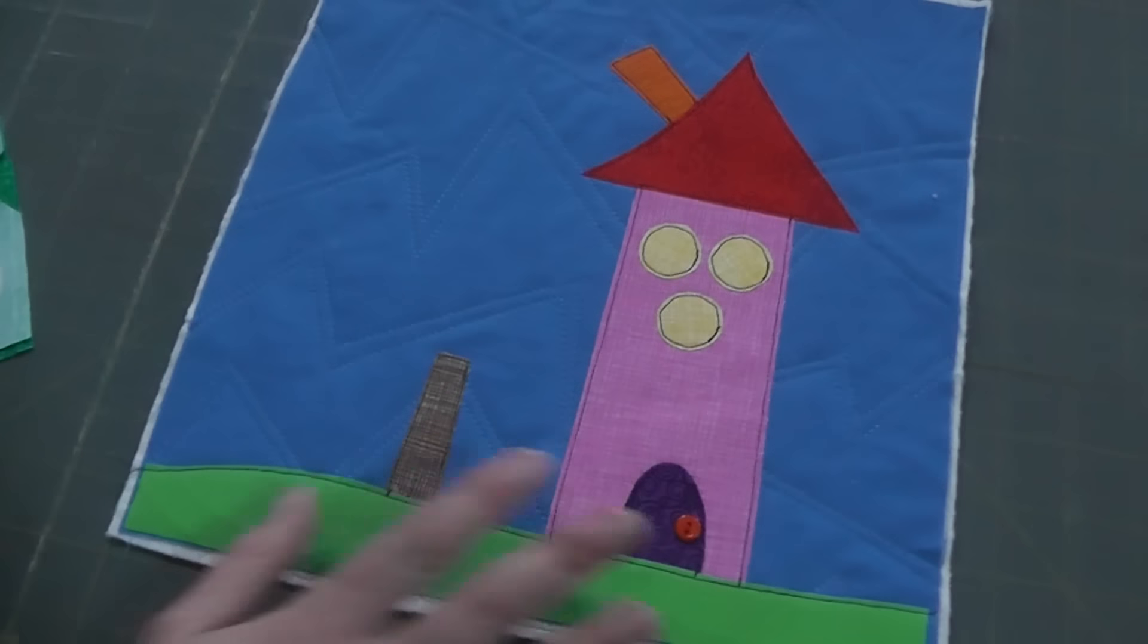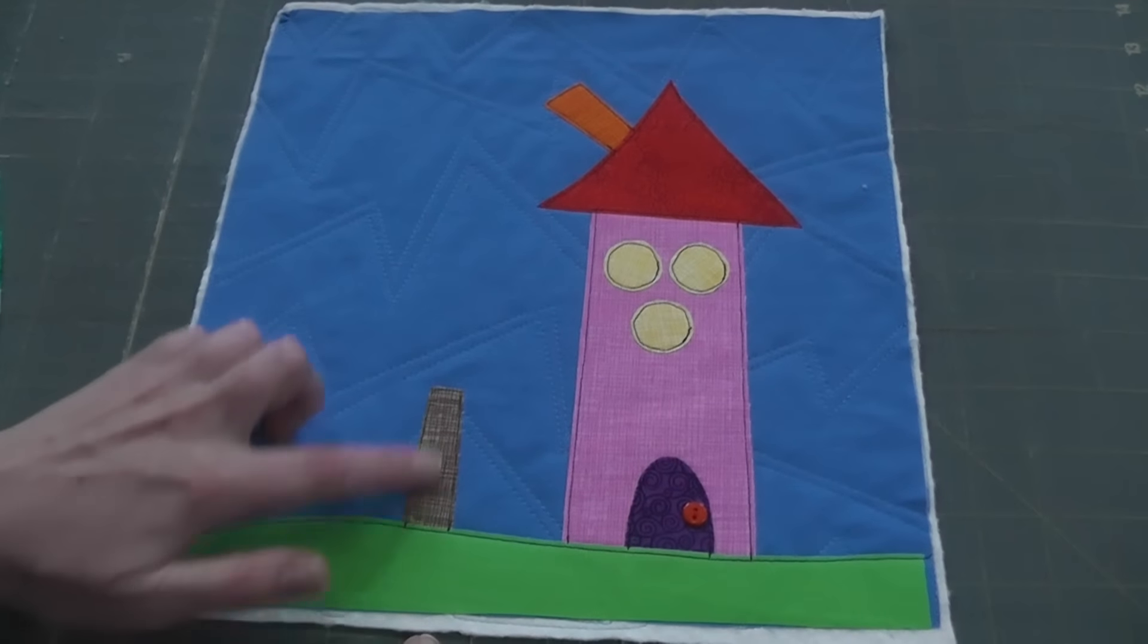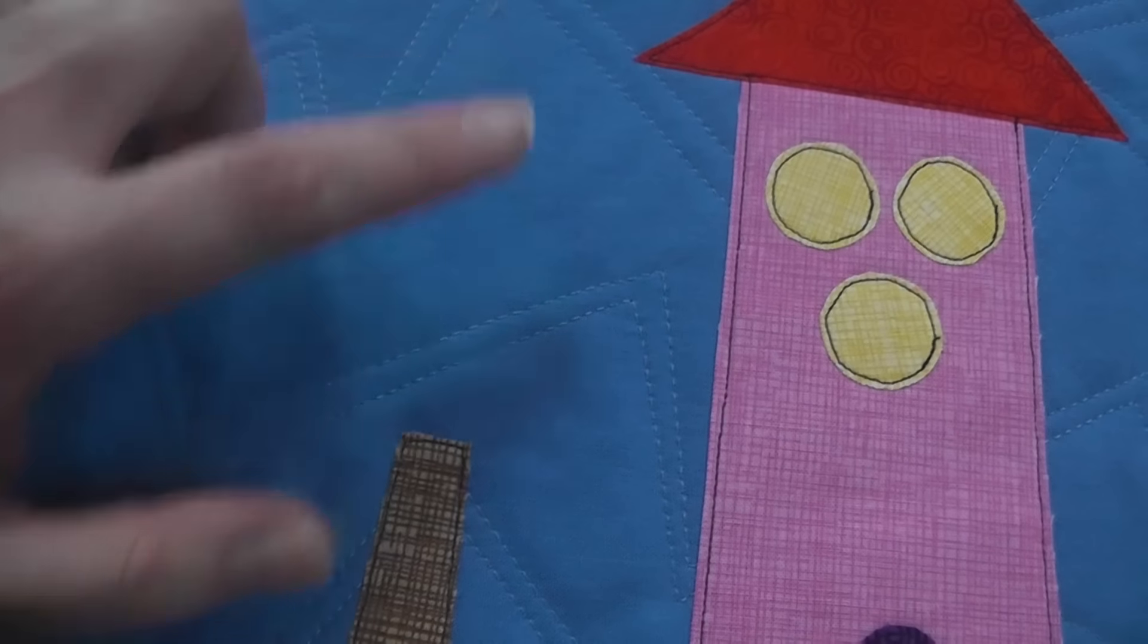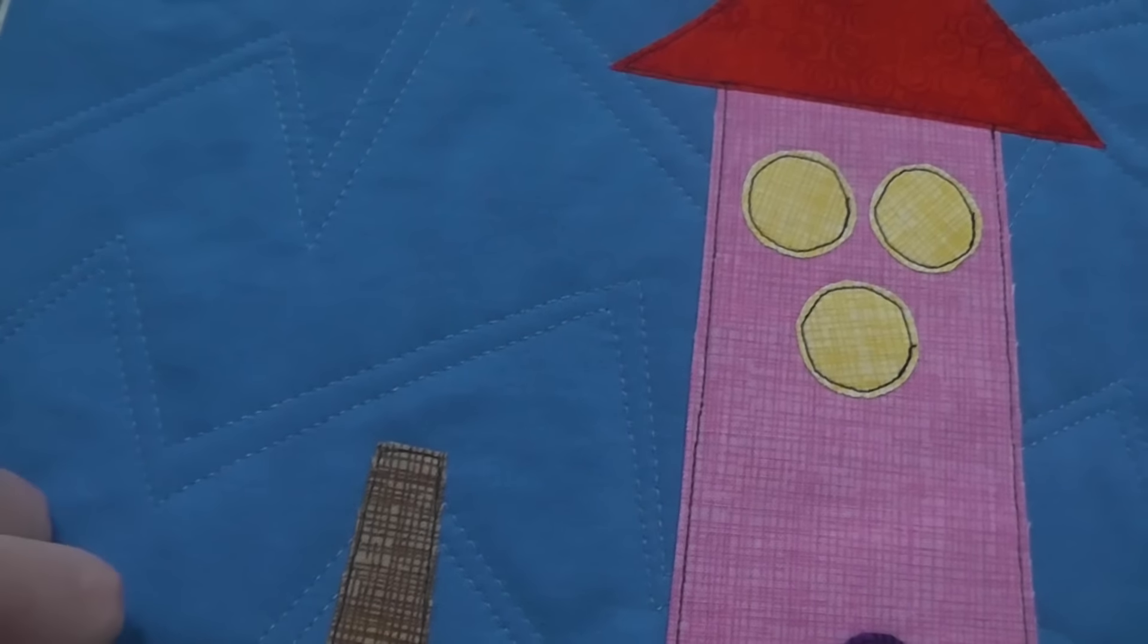This is the block we're going to be working with, totally different house. We have a tree trunk here that's missing its top, so I'm going to show you how to make a little puffy tree top for that tree trunk.